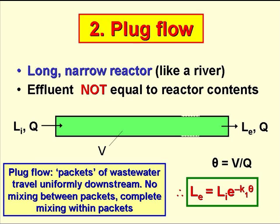The other ideal flow regime is plug flow, and this can be visualized as a very long, narrow reactor, like a river for example. And for this type of reactor, the effluent is not the same as the reactor contents, as these vary along the reactor length.